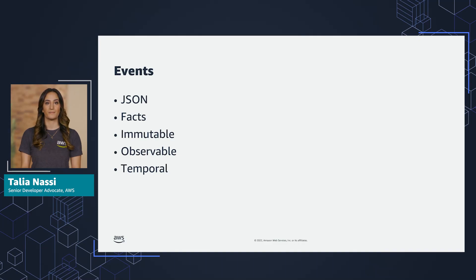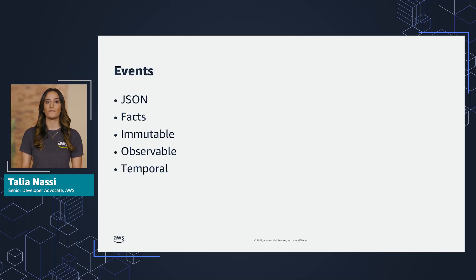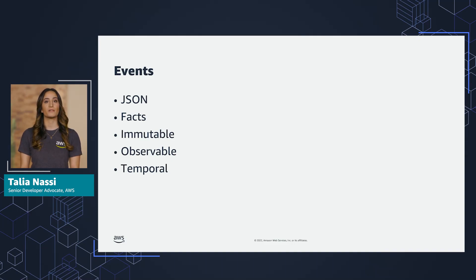Events are observable — any service that is authorized can watch an event. Consider a coffee shop example where there is a barista who makes coffee and a pastry chef who makes pastries. When a customer orders a cup of coffee, the barista starts to make the coffee and the pastry chef takes no action. However, if a customer orders a chocolate croissant, then the pastry chef starts making it and the barista takes no action. The pastry chef is only interested in orders relating to pastries and the barista is only interested in events relating to coffee.